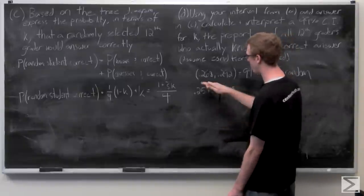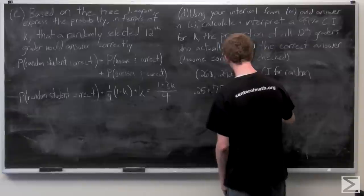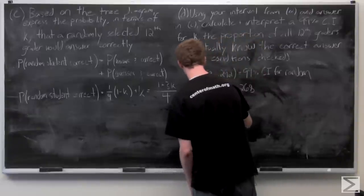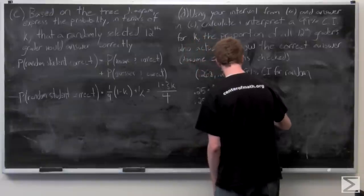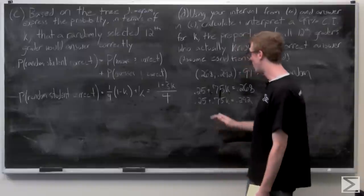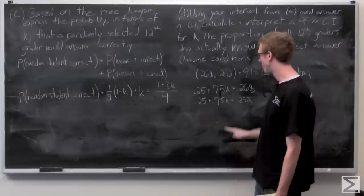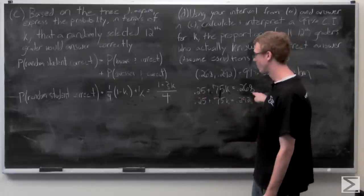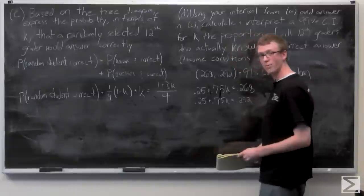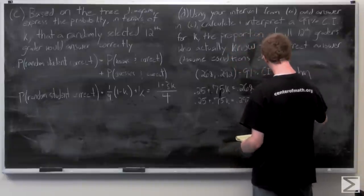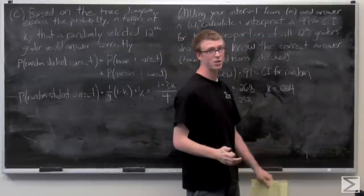For the lower bound: 0.25 plus 0.75K equals 0.268. For the upper bound: 0.25 plus 0.75K equals 0.292. Subtract 0.25 from each side of each equation and divide by 0.75 to solve for K. On the lower bound, K equals 0.024. On the upper bound, K equals 0.056.